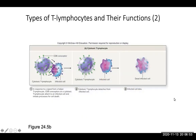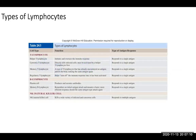A cytotoxic T cell will eventually contact an infected cell; the cytotoxic T lymphocyte will detach and the infected cell will die. Here is a summary chart of all the types of T lymphocytes, B lymphocytes, and natural killer cells that you should spend some time learning. Feel free to pause the slide and review the different types of T lymphocytes, B lymphocytes, and the natural killer cell.